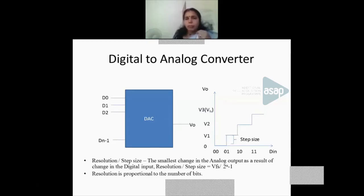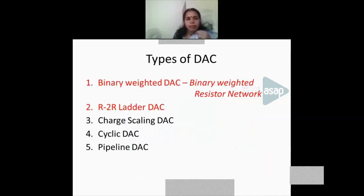Now I will discuss the parameters and types of DAC. There are mainly five types: binary-weighted DAC, R2R ladder DAC, charge scaling DAC, cyclic DAC, and pipeline DAC. In this session, I will discuss only the first two — binary-weighted DAC and R2R ladder DAC — as these are included in your syllabus, specifically in the sixth module of NL of Integrator Schedule EC 2.0.4.